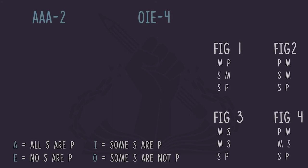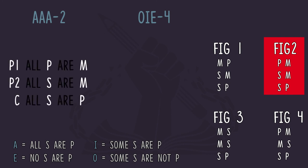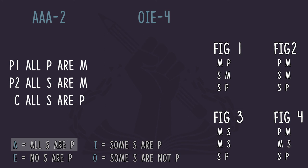Now let's look at these forms in motion — AAA-2 and OIE-4. Starting with AAA-2: the figure two syllogism has the middle term in the predicate position in both premises, so we write: premise one, P M; premise two, S M; conclusion, S P. Now the moods — each statement is mood A, so each has the pattern 'all S are P.' Applying that: all P are M, all S are M, and all S are P. An AAA-2 will always result in this.